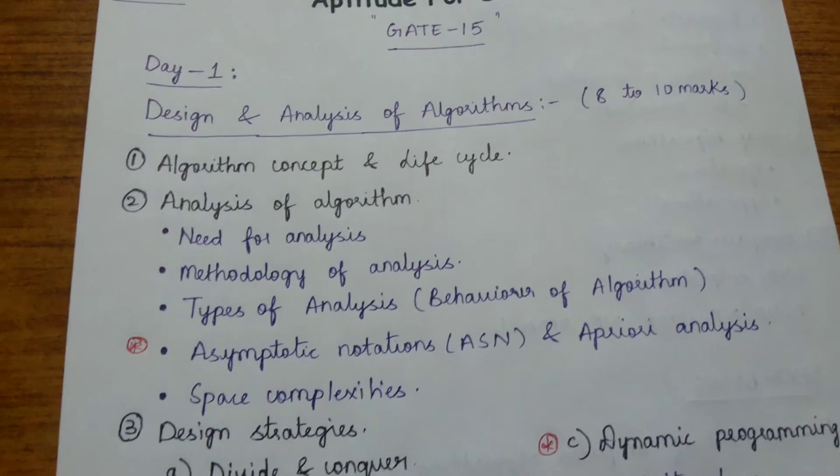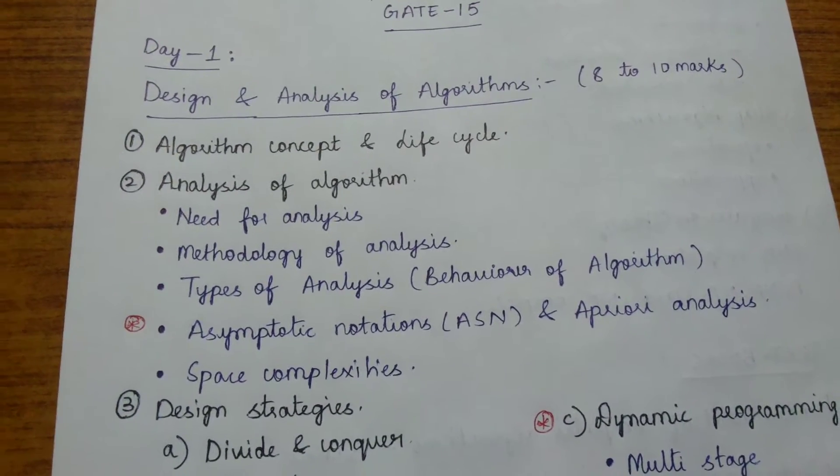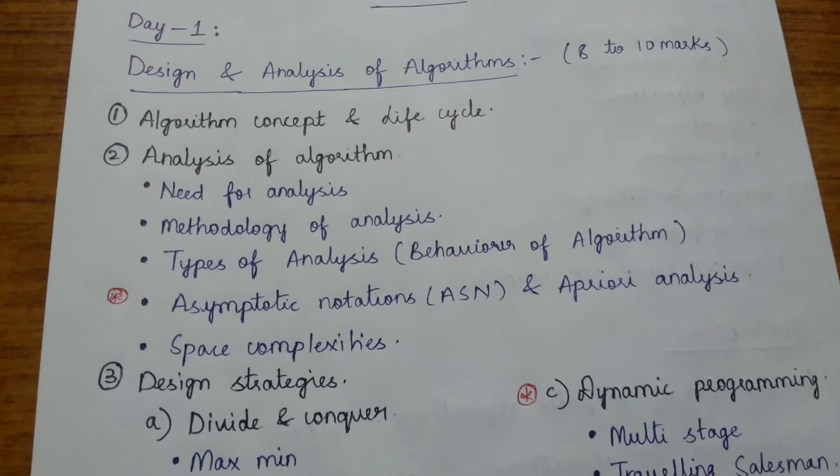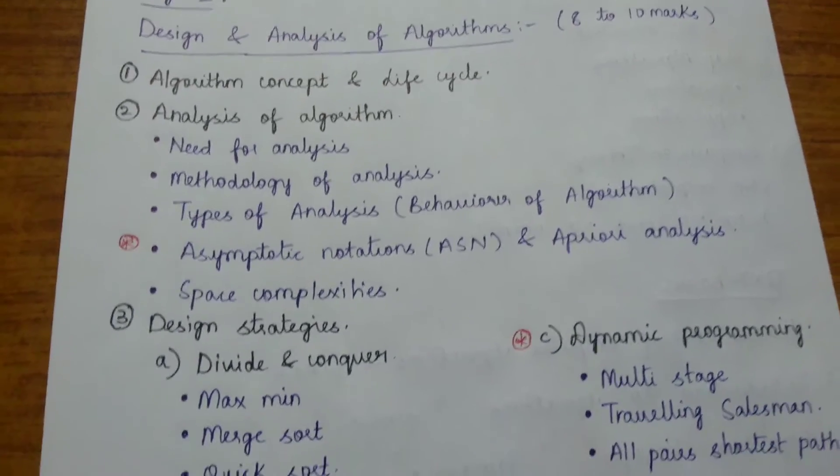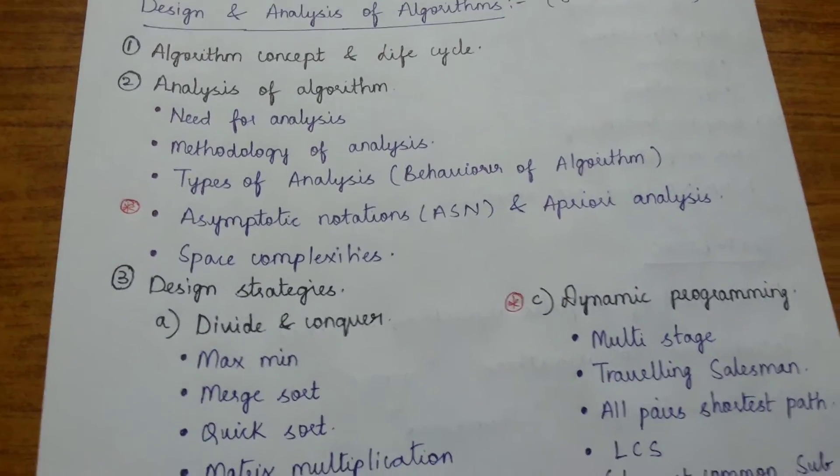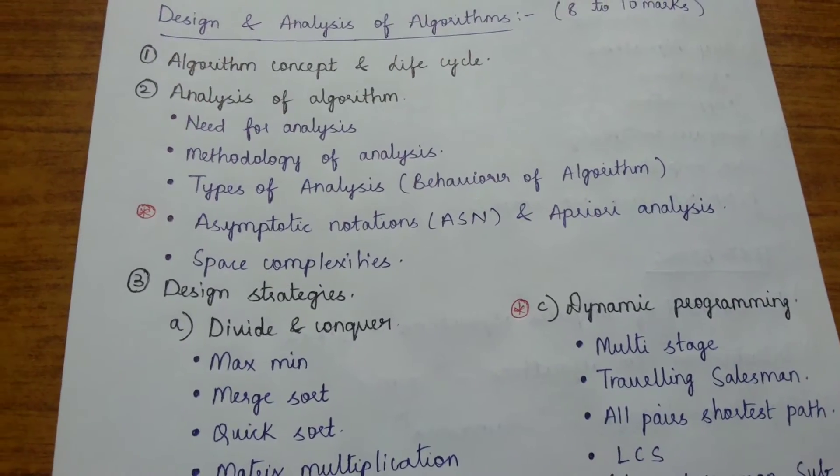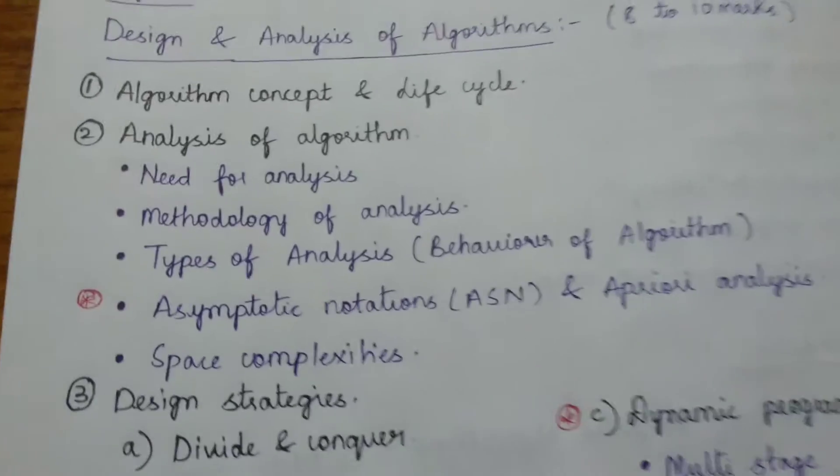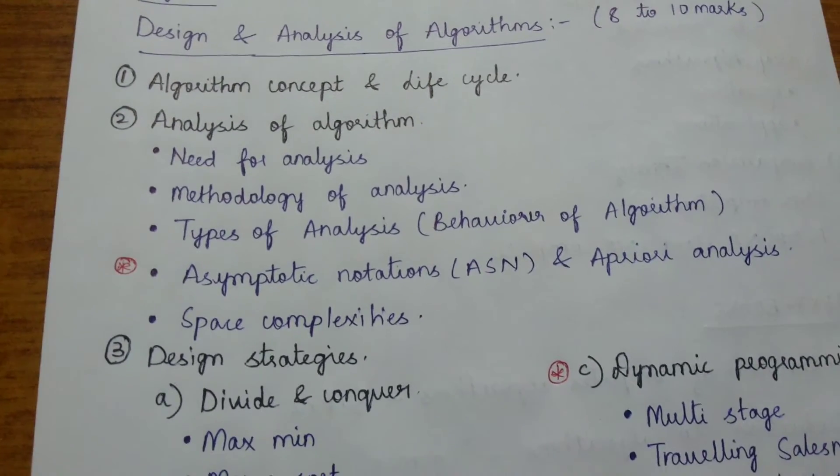Next is analysis of algorithms, covering need for analysis, methodology of analysis, types of analysis, and behavior of algorithms. Then asymptotic notations and a priori analysis, space complexities. I've marked asymptotic notations with a red asterisk because it is a very important concept.